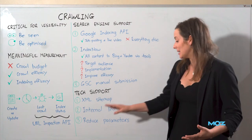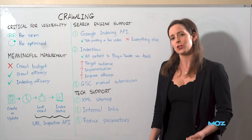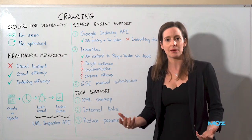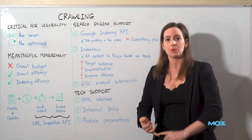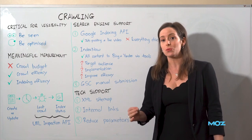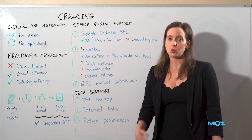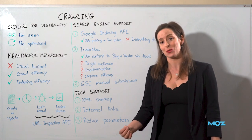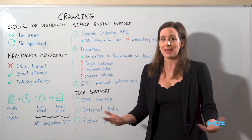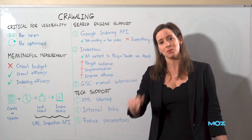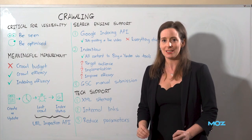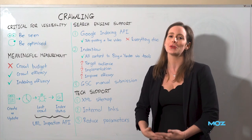The last thing is to reduce the number of parameters, particularly tracking parameters. You need UTM tag parameters to see where your email, social, and push notification traffic is coming from — but there is no reason those tracking URLs need to be crawlable by Googlebot. They'll actually harm you if Googlebot crawls them, especially without the right indexing directives. So instead of using a question mark to start your UTM parameter string, use a hash. It still tracks perfectly in Google Analytics but it's not crawlable by Google or any other search engine.